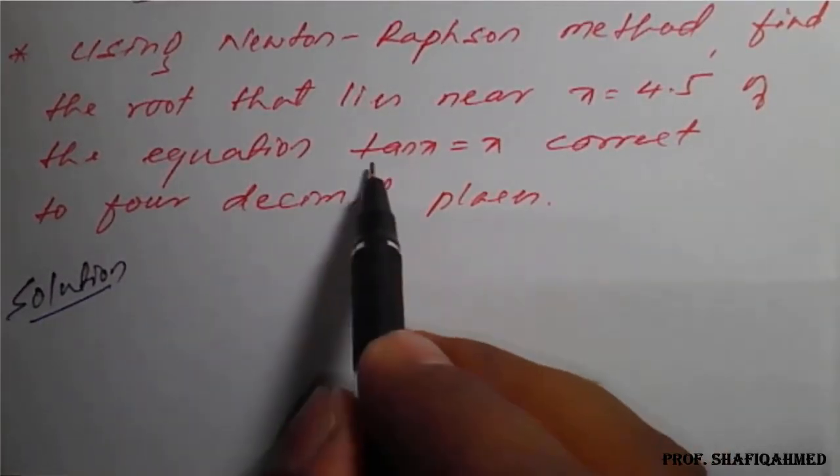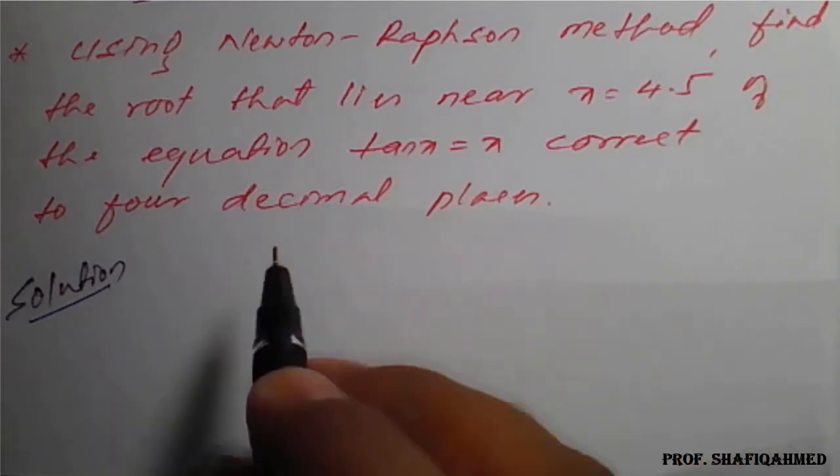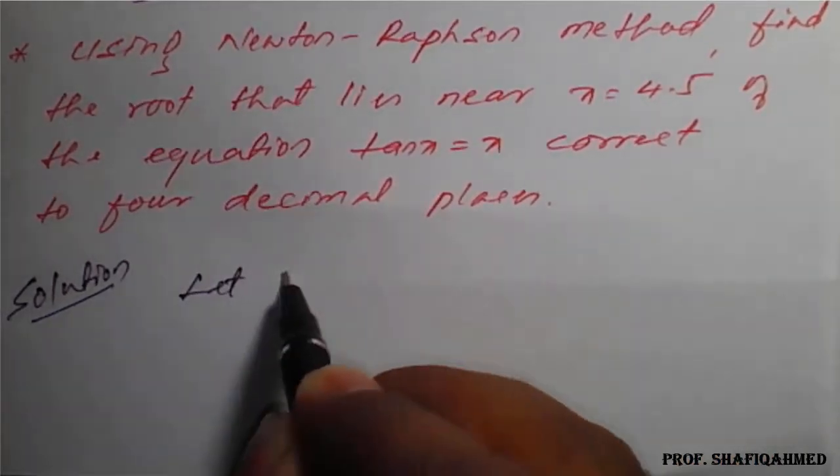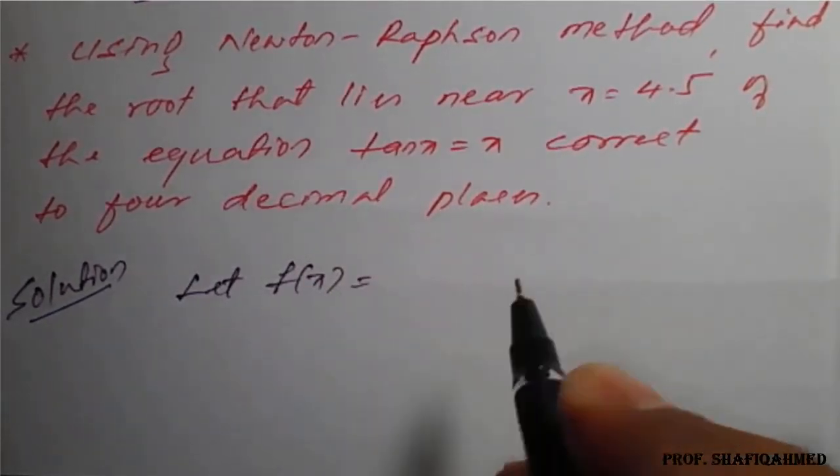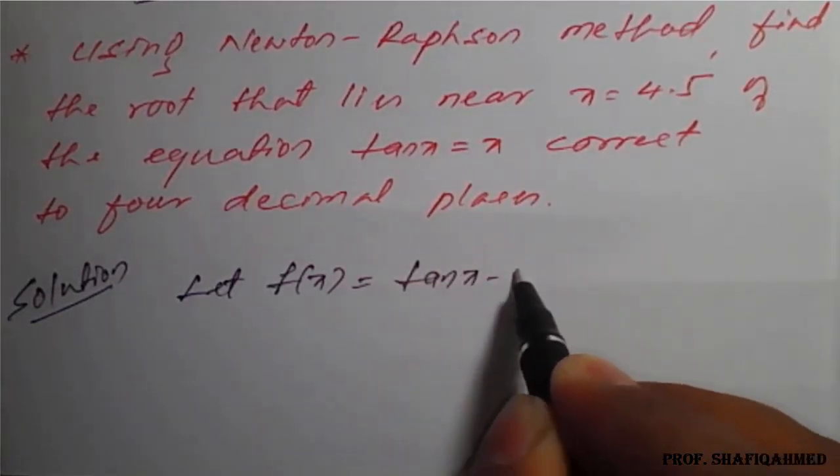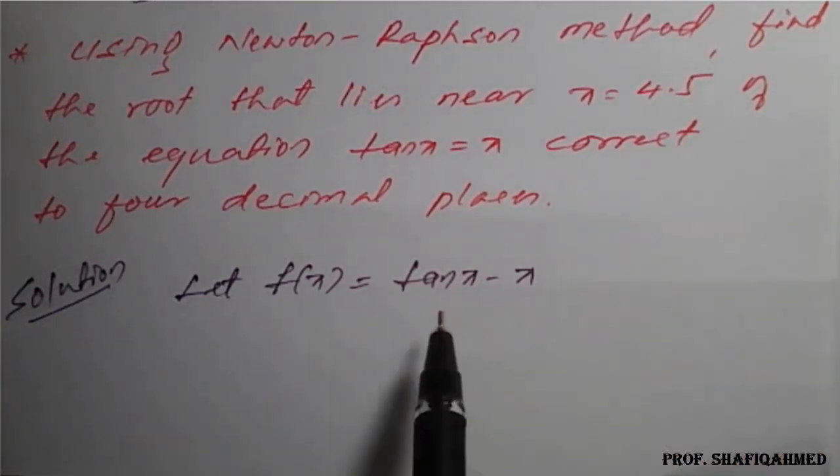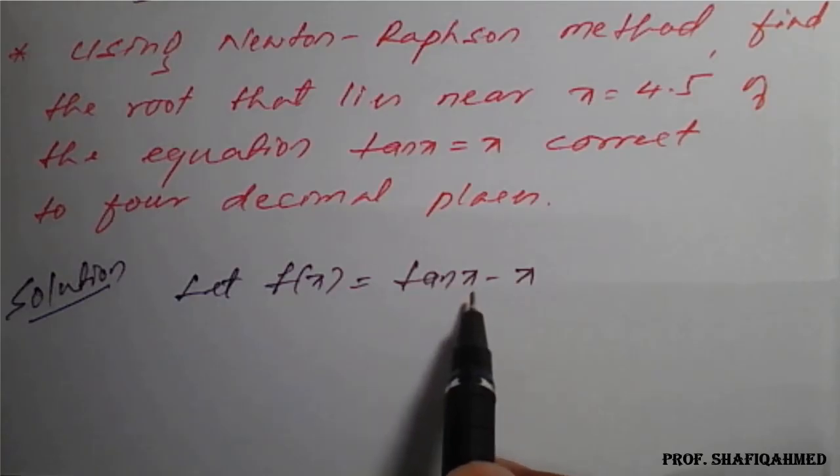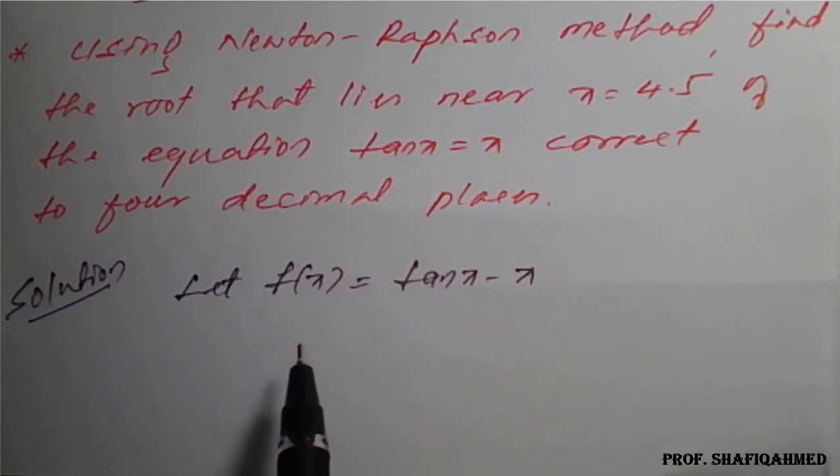The solution: the given function tan x equals x will be considered as f of x. Let f of x equals tan x minus x. This is a trigonometric function, so your calculator mode for calculation should be in radians.